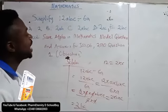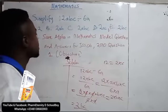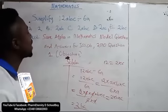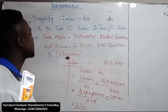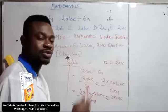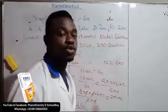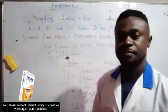So the answer to 2010 mathematics objective question from Show Alpha, a mathematics model question and answer for JSSEE, Junior Secondary School Certificate Examination, is E, 2BC.